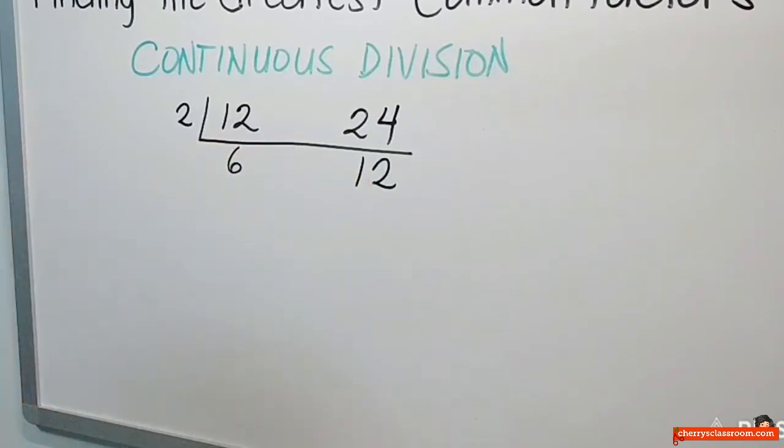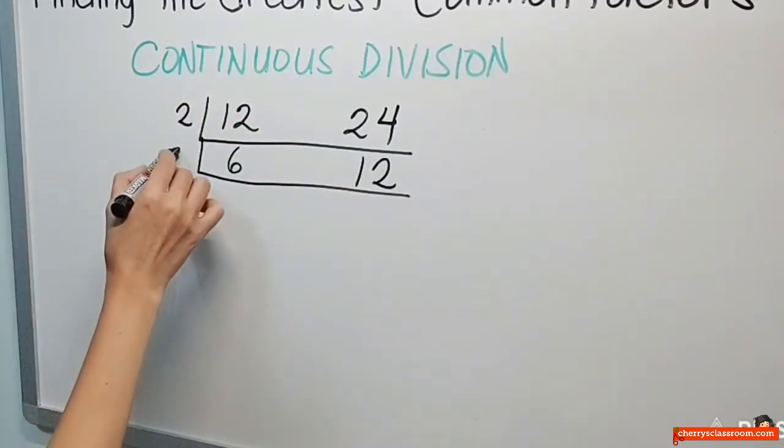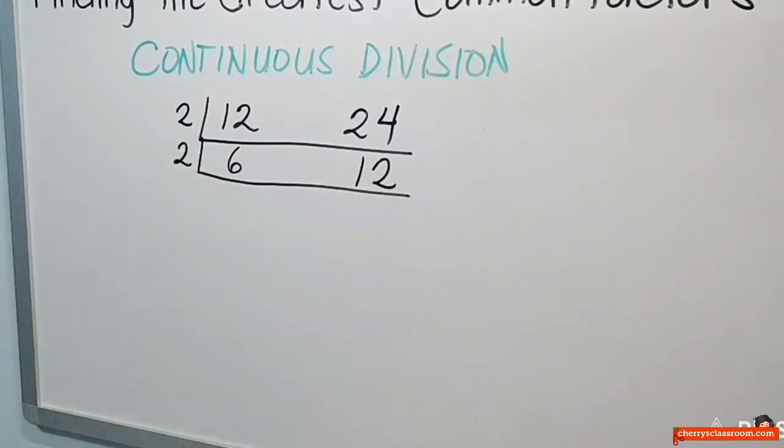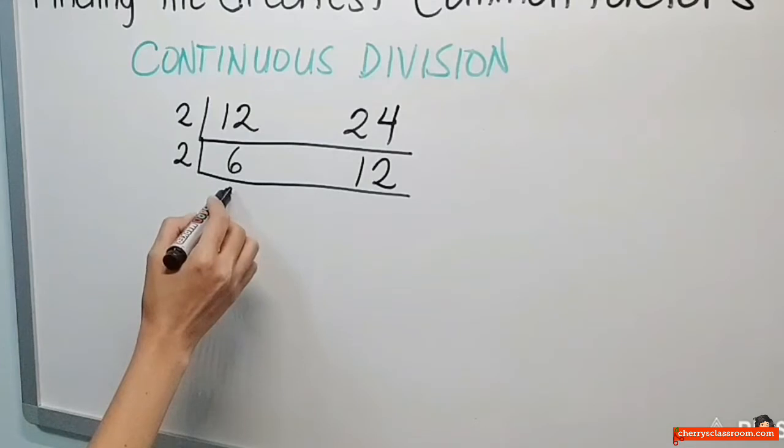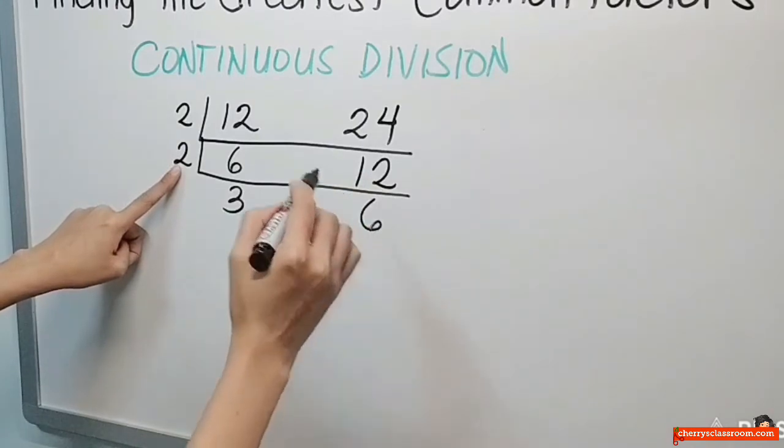Ngayon, ang 6 at ang 12, may prime number ka pa na pwedeng i-divide sa dalawa. Ano kaya yun? Pwedeng 3 pa rin, diba? At pwedeng 2. Okay. Yun ang pinili ko. Pili pala ko pinipili yung mababang number. So, 6 divided by 2, ang sagot dyan ay 3. At 12 divided by 2, ang sagot mo dyan ay 6.